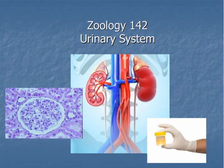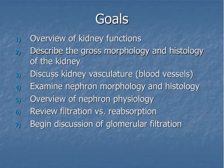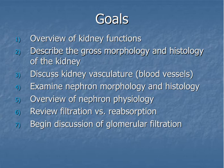Hello, welcome to Zoology 142. This is our first lecture on the urinary system. In today's lecture, we're going to have an overview of kidney functions, the gross morphology and histology of the kidney, and discuss the vasculature surrounding the kidney. We'll talk about nephron morphologies — nephrons are the functional units of kidneys — and nephron physiology. Finally, we'll review filtration and reabsorption and begin a discussion about glomerular filtration, which we'll continue in our next lecture.